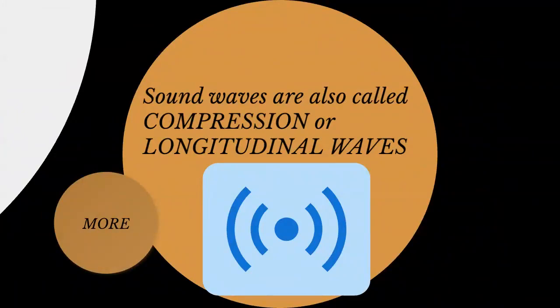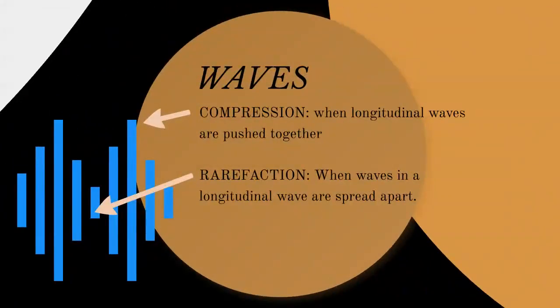Sound waves are also called compression or longitudinal waves. The parts of the wave that are pushed close together are called compressions. The parts of the wave that are pushed further apart are called rarefaction. Do it with me with your hands — compression, rarefaction, compression, rarefaction. This is how sound waves travel. Sometimes I see images of sound waves going up and down — those are for light waves only. Compression waves move back and forth like this.